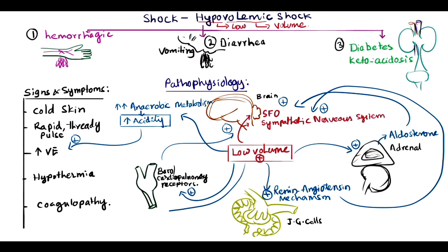Acidosis stimulates peripheral and central chemoreceptors in the respiratory centers, which try to blow off carbon dioxide. Additionally, low volume triggers coagulopathy — meaning decreased ability of coagulation — or may cause disseminated intravascular coagulation (DIC) at the intravascular level. This concludes the physiological response of hypovolemic shock.